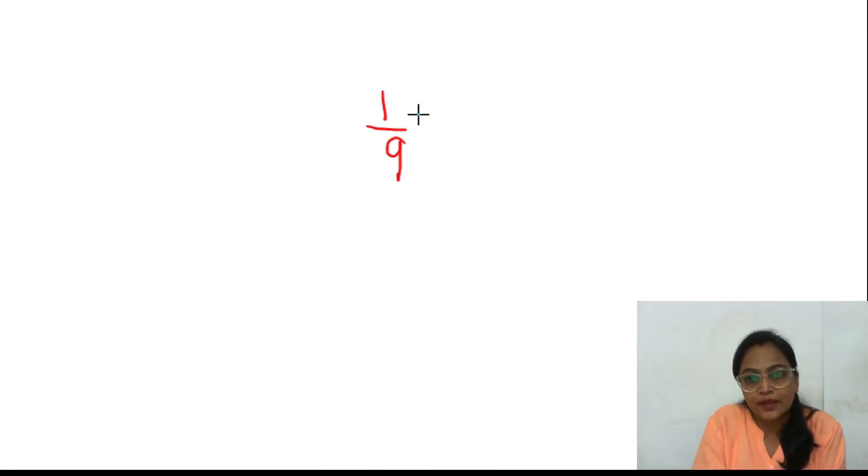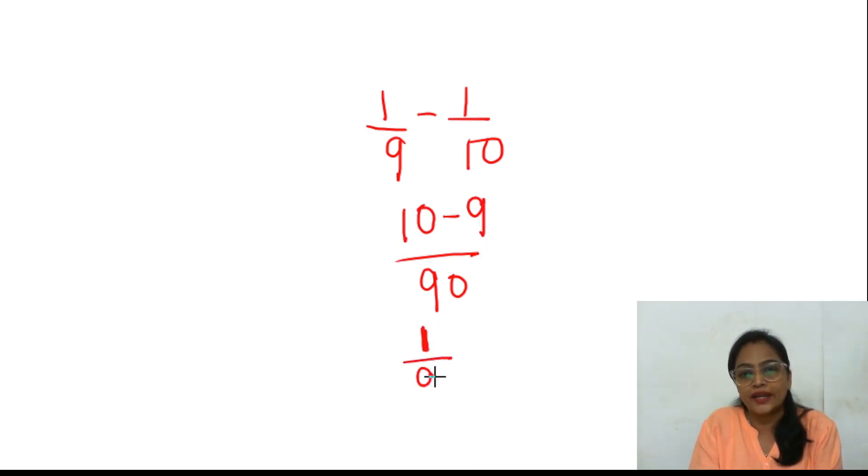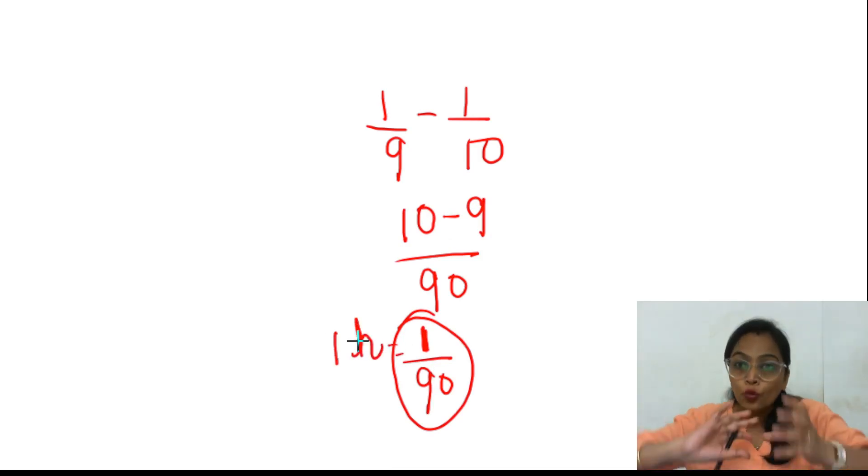Leak ke karan kar raha hai mera one by nine minus one by ten. Iska mera LCM lu, mera ninety aayega. Yaha pe mera ten aa jayega, yaha pe mera nine aa jayega. Ten minus nine will be one by ninety. Toh one by ninety leak ke karan kar raha hai ek hour mein. Toh pura leak kaam karne mein lagegi ninety hours ka time. Aur pura leak ka kya kaam hai? Khali karna tank. Matlab ki ninety hours mein pura tank khali ho jayega, ya cistern khali ho jayega.